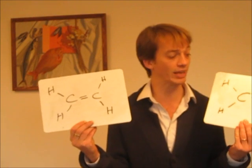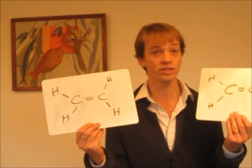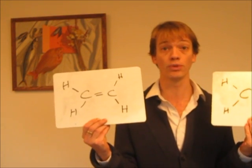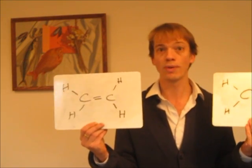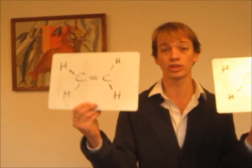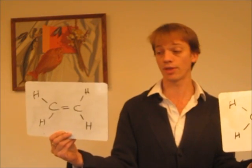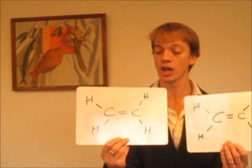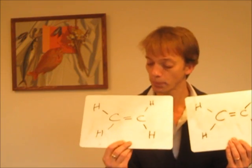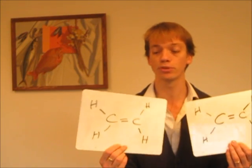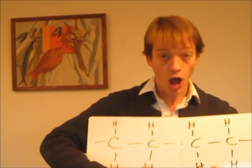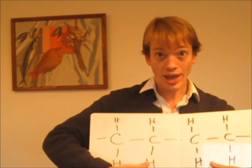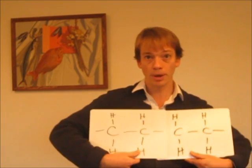There's another molecule of ethene, exactly the same — a small molecule with a double bond. Now when we polymerize something, we bring a long chain of lots of these molecules together. And what happens is, those double bonds in the middle break open and the molecules end up forming a long chain. That long chain is called a polymer.